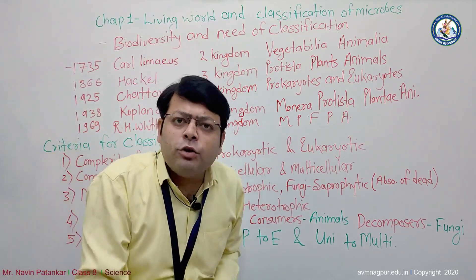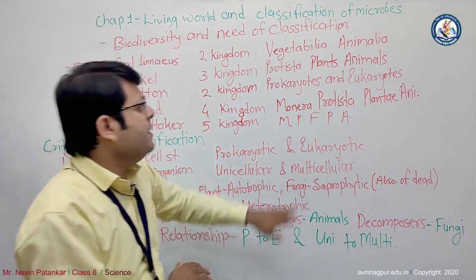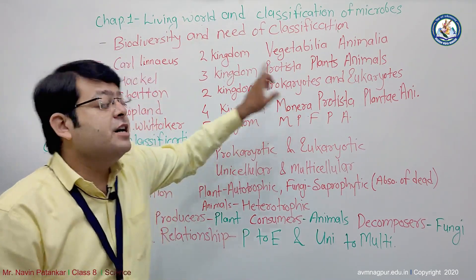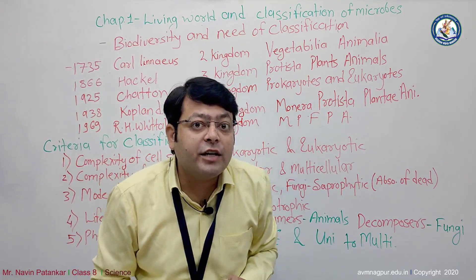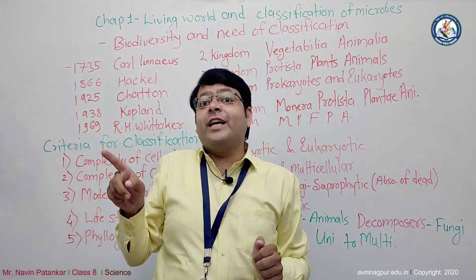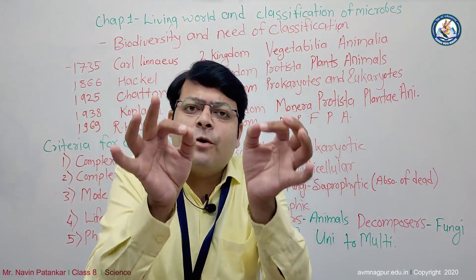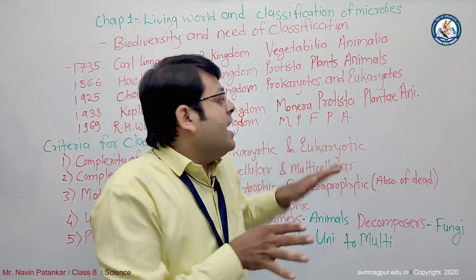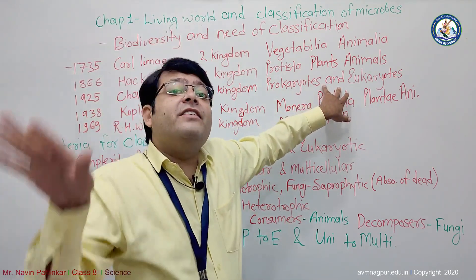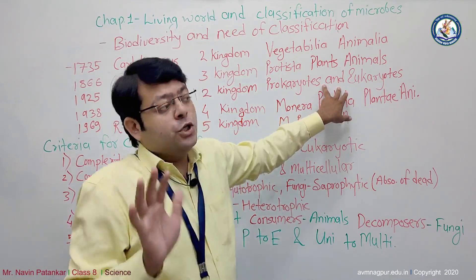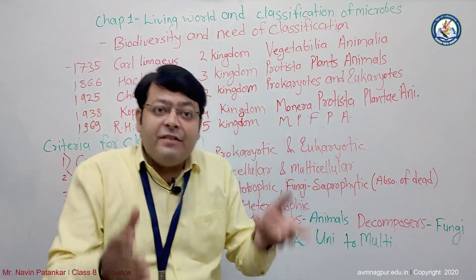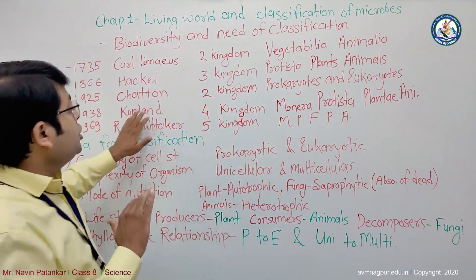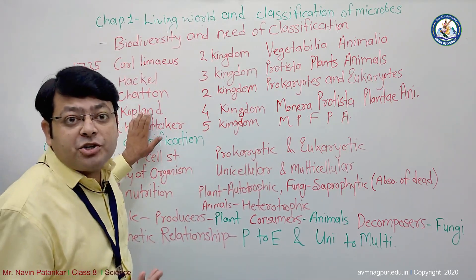After Haeckel's theory, a new scientist came into the picture — Chatton, in 1925. He invented a two-kingdom classification system dividing all living systems into two types: prokaryotic and eukaryotic. But this theory also had some limitations.